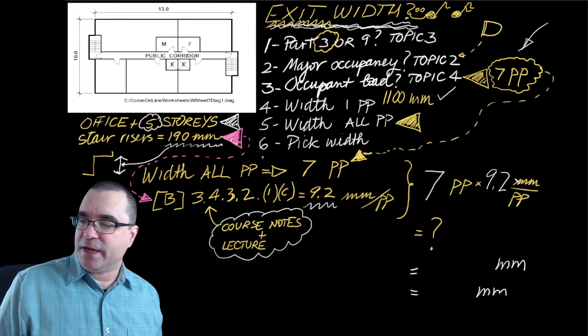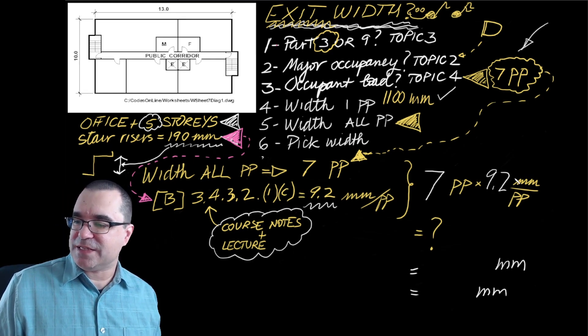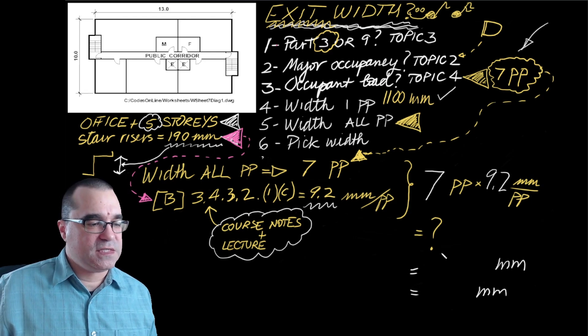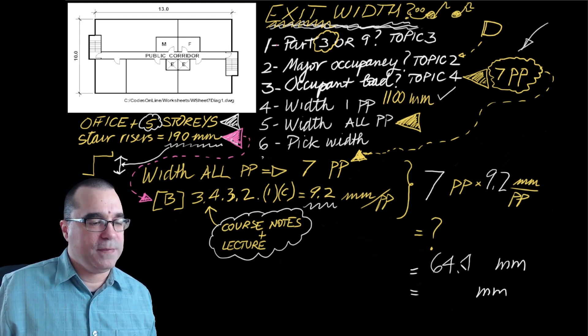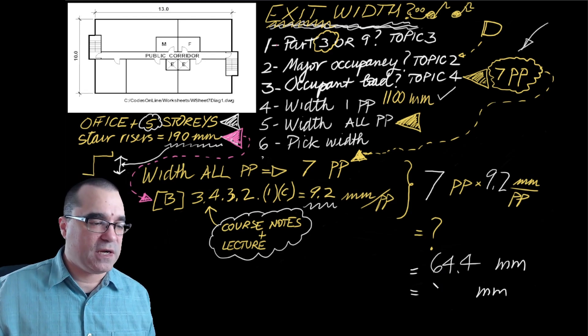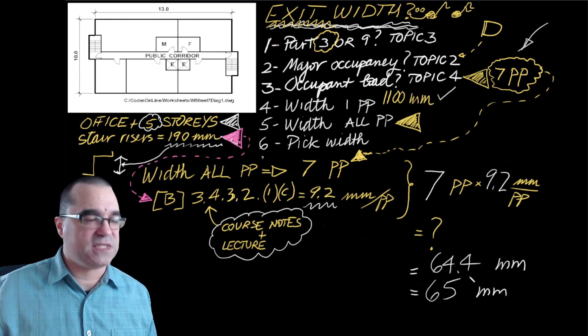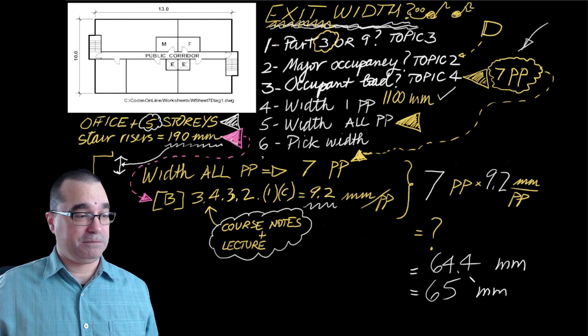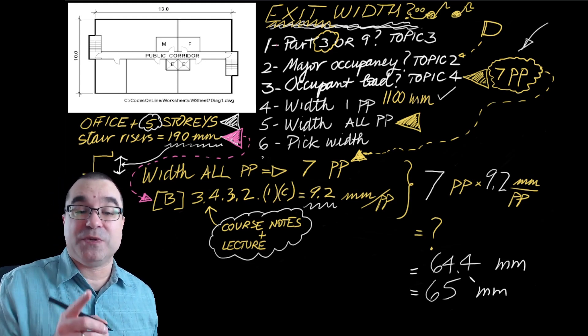So when I multiply those two numbers against each other, I get 64.4 millimeters, and I round that up to the nearest millimeters to get 65. So now that we're done with step number five, we can move on to step number six.